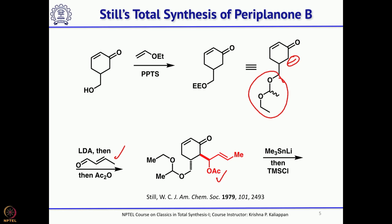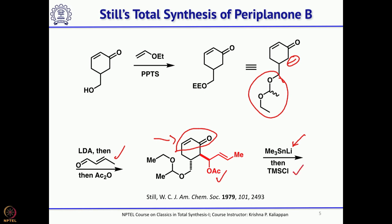Next, with this enone — if you treat with trimethyltin hydride and butyllithium, that generates the corresponding lithiotrimethylstannane derivative. This can undergo 1,4-addition to the enone, and the resultant enolate is trapped as the TMS enol ether.